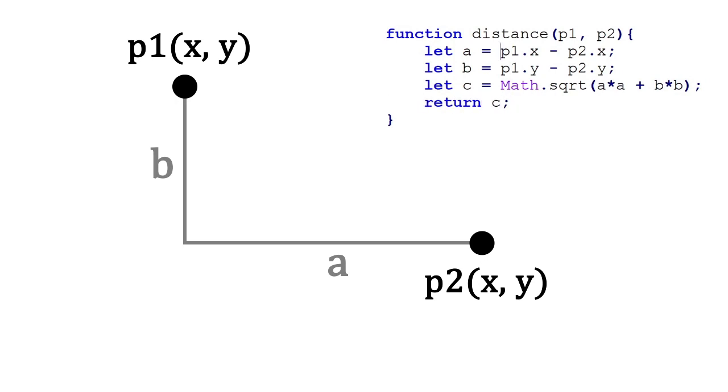Now, to write it more proper, you should take the absolute value of the difference here. But, because these values are squared anyway, it doesn't matter, so we can leave it as such, and the code is also more efficient in this way.